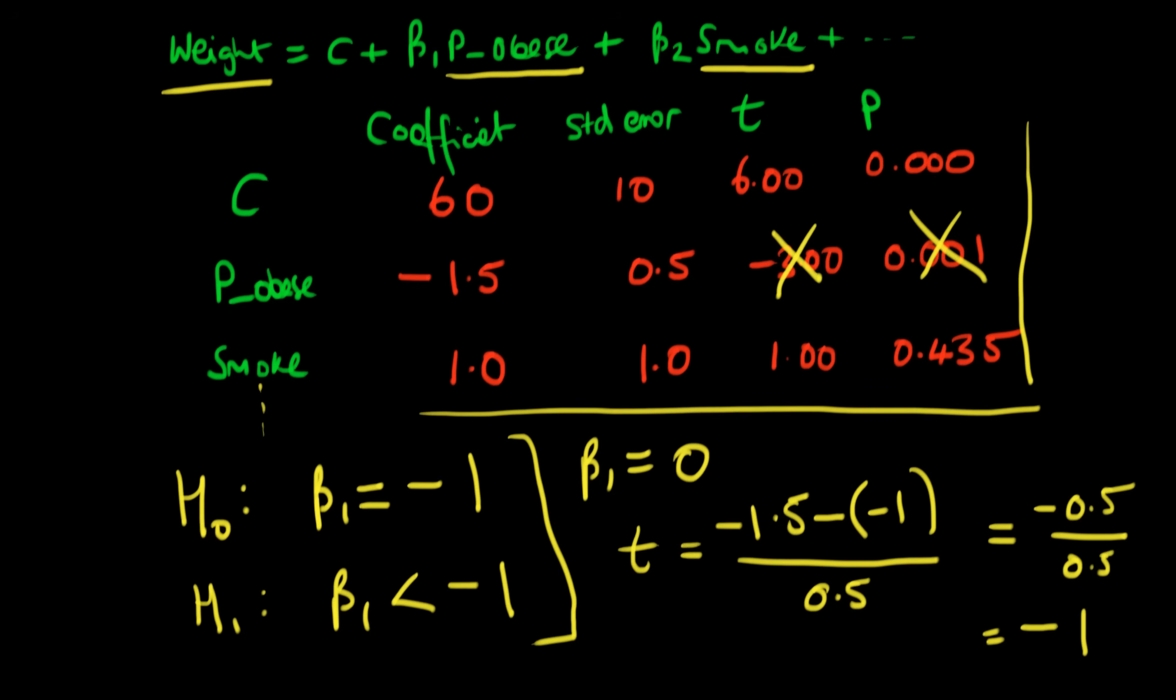Well what does this minus one mean? Well we have to look up whether this minus one is greater in magnitude than our critical value which we look up in the t table.